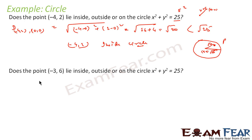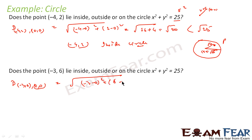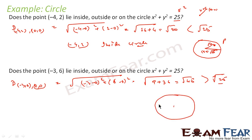We'll take one more example. We have to find whether (-3, 6) is outside or inside the circle. We'll find the distance between (-3, 6) and (0, 0): √((-3 - 0)² + (6 - 0)²) = √(9 + 36) = √45. Since √45 is greater than √25, the point P is outside the circle.